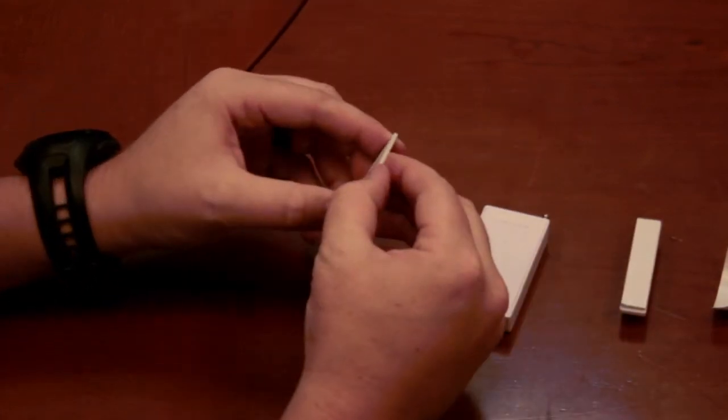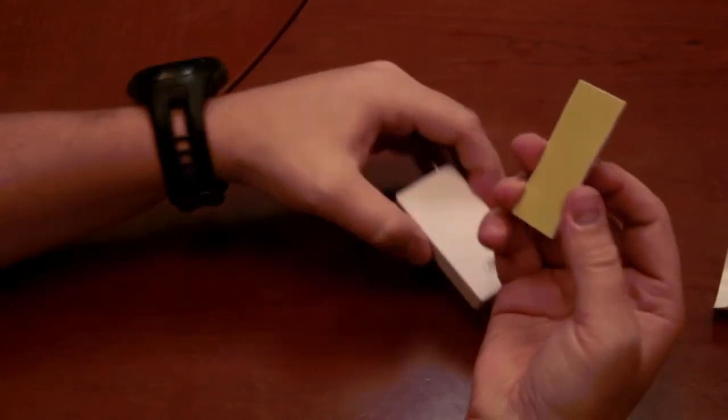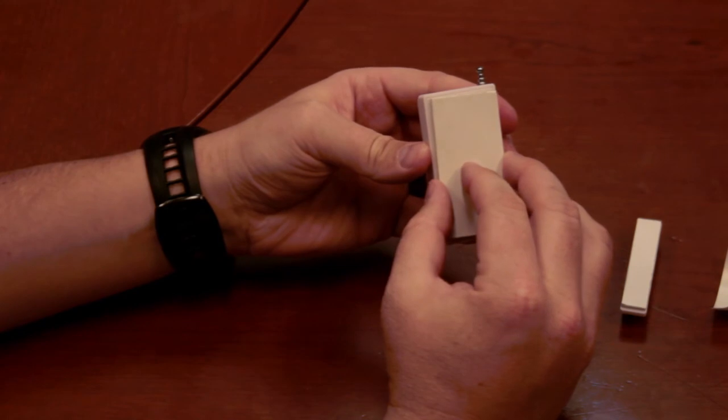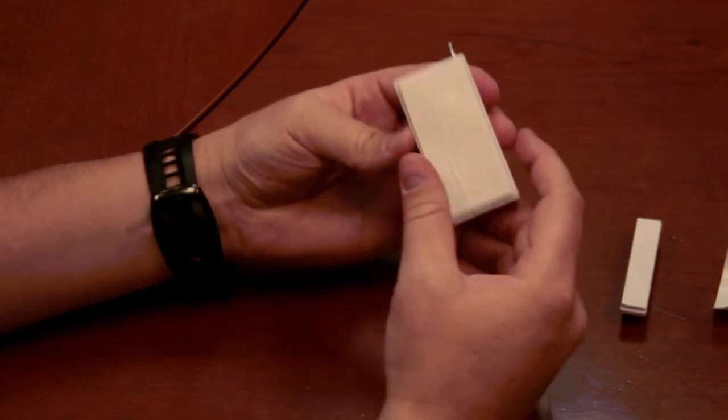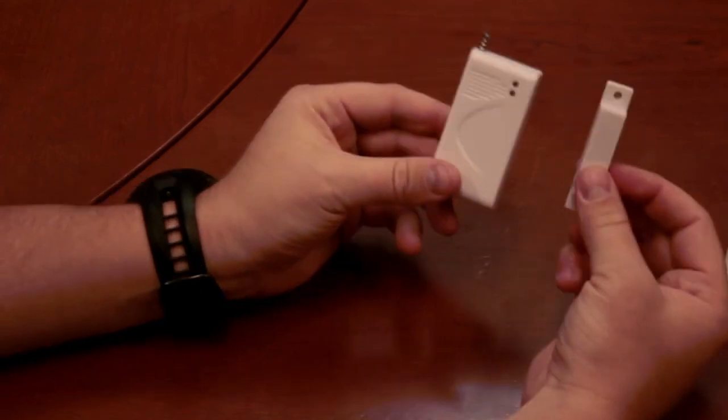Same thing with the transmitter. Peel away that adhesive and apply it centered on the back of that transmitter. Go ahead and make sure it's a solid connection. Now they're ready to be mounted.